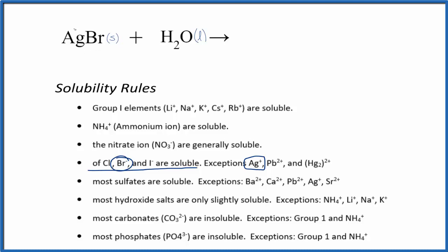Silver has a one-plus ionic charge and the bromide ion has a one-minus charge. So we would end up with Ag+ and Br-, the bromide ion.